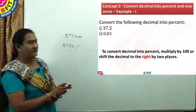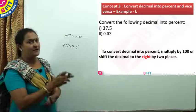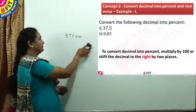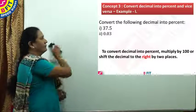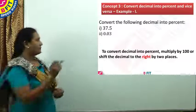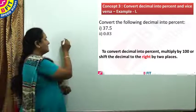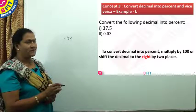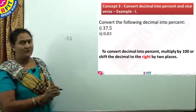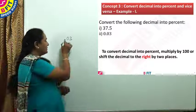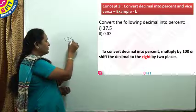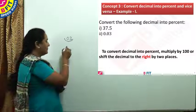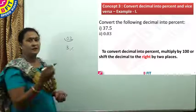Now we will see the percentage for the next decimal. The decimal is 0.03. To find the percentage, multiply it with 100 or just shift the decimal two places to its right. So it is 3 percent.